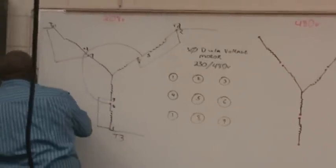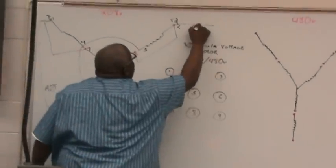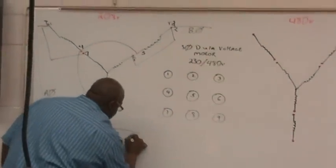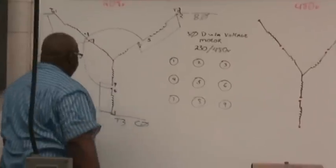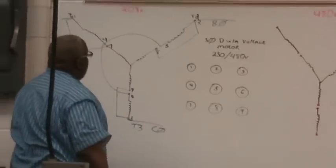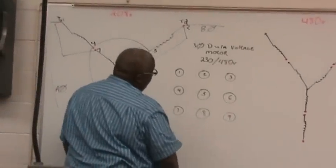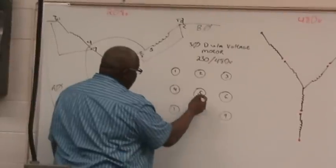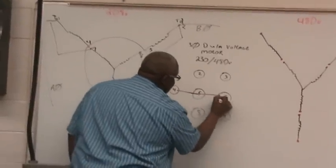Or again, A phase, B phase, and C phase. Think of it like this in groups: four, five, and six are tied together.